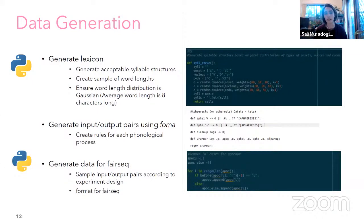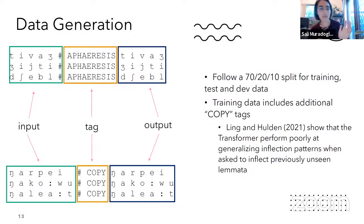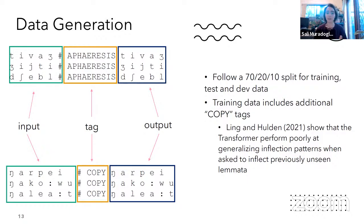The second stage is generating the input-output pairs, which we did using FOMA — a way to compile finite state transducers. We generate rules for phonological processes; on screen you can see an example of apheresis. We generate data with the lemma, the tag, and an output. The last stage is cleaning the data up for FAIRseq, sampling the input-output pairs according to our experiment design, and making sure it's in the required format. We follow a 70-20-10 split, and we also include a copy tag in our training data because previous research has shown that transformer models perform poorly at generalizing when asked to inflect previously unseen things.